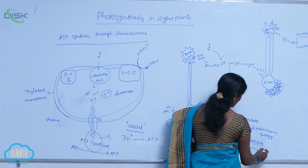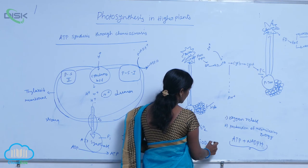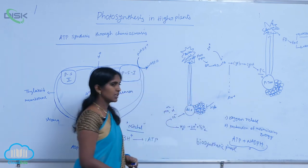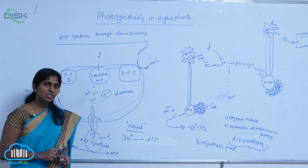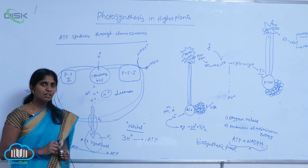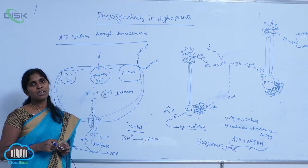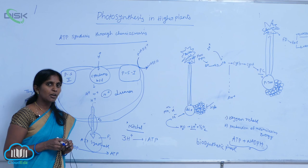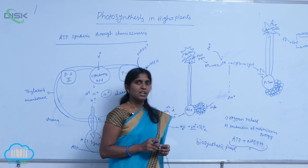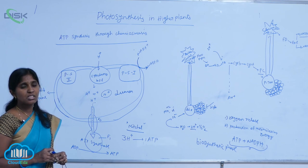The released assimilation energy is utilized in the biosynthetic phase. In the biosynthetic phase — which occurs during dark reactions — carbohydrates are synthesized, and carbon assimilation is carried out. Carbon dioxide is reduced to carbohydrates. This stage is called the biosynthetic phase, and assimilation energy is utilized for carbohydrate preparation.